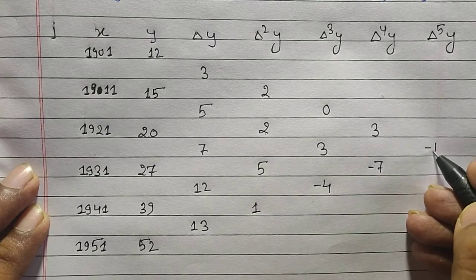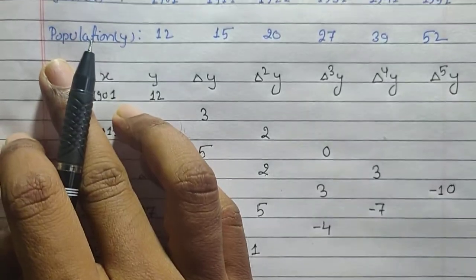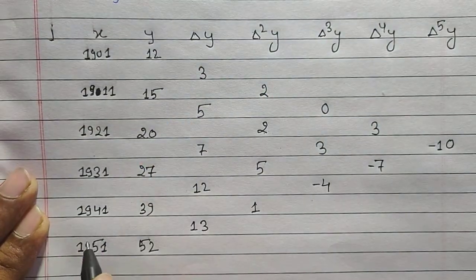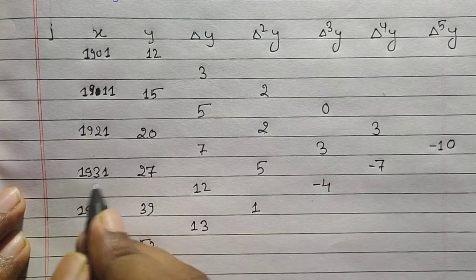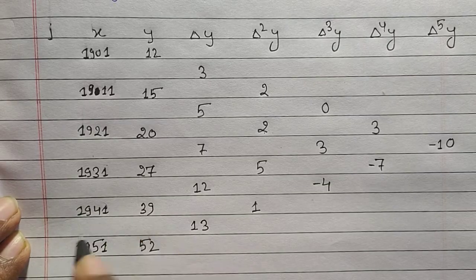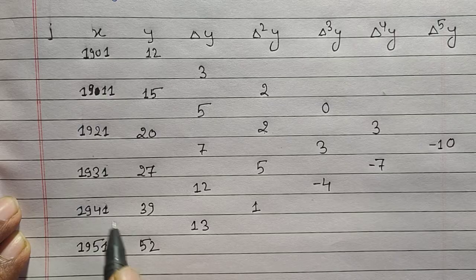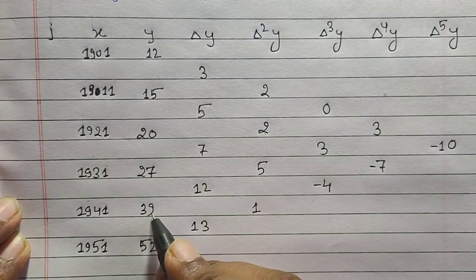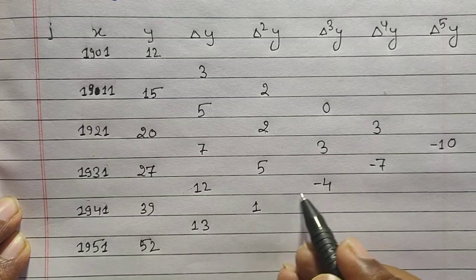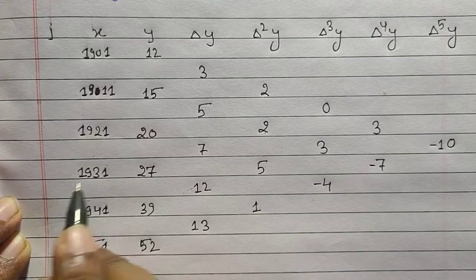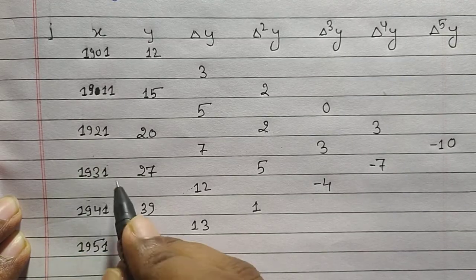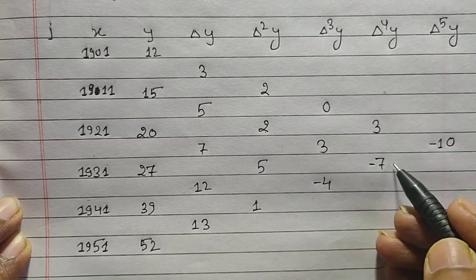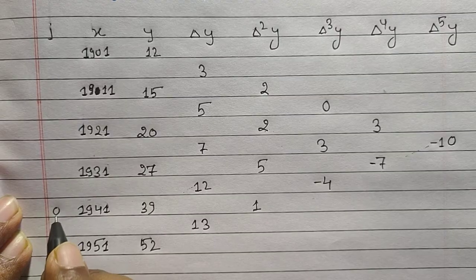Δ⁵y is given as −7−3=−10. Now, we are asked to find the population in year 1936, which lies between 1931 and 1941. You can take either as x₀. If I take 1941 as x₀, then y₀ will be 52 and we move backward up to the −4 row. If I take 1931 as x₀, y₀ = 27 and we would need more steps — that's going to be longer.